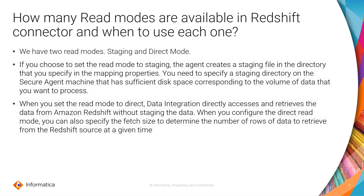In the Redshift connector in the Cloud we have two read modes: Staging and Direct mode. It's important to understand what happens with each of them and when is best to use one over the other one.